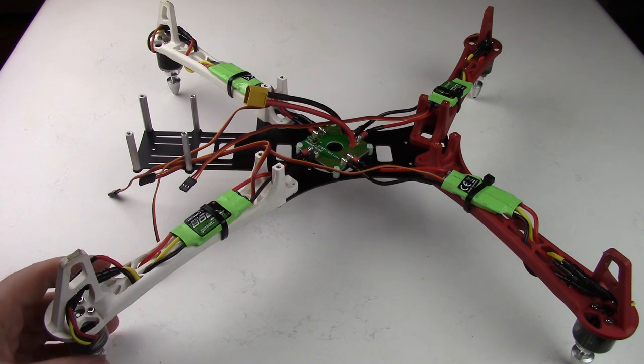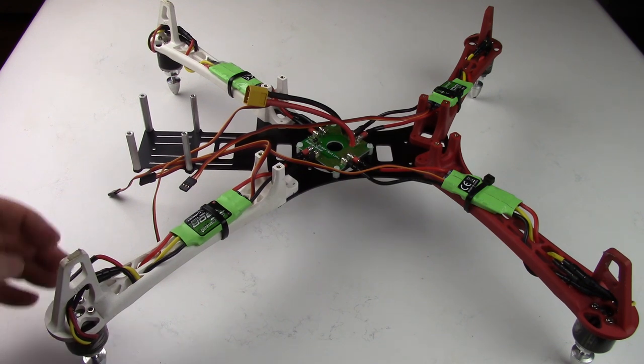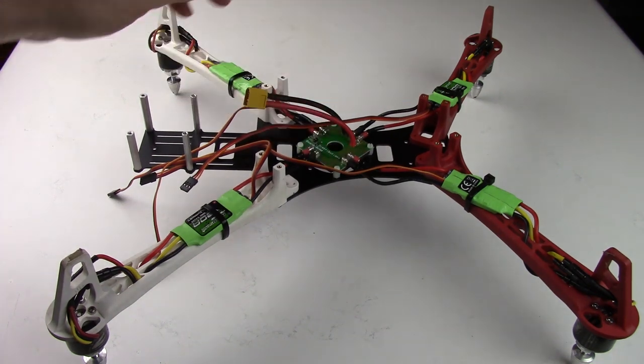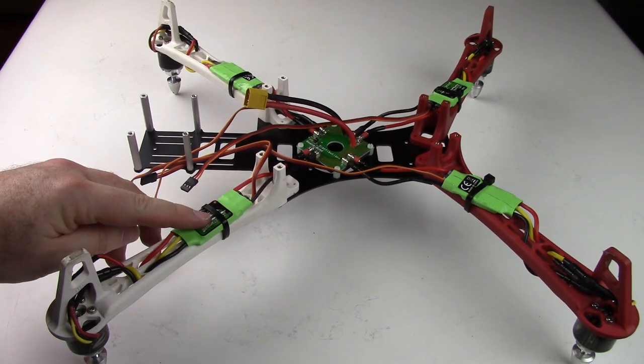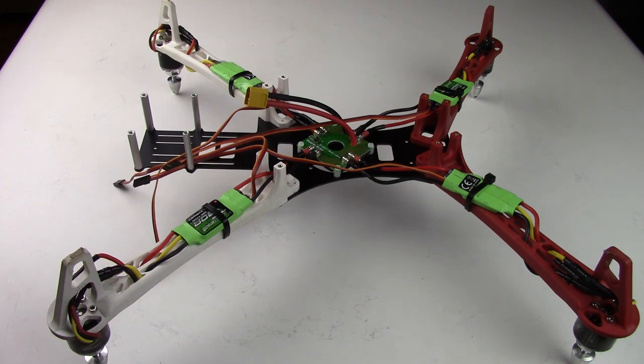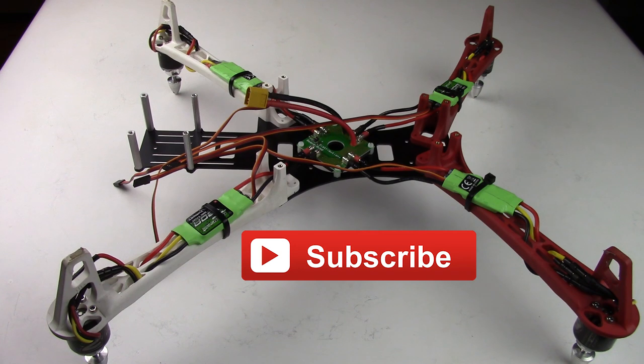So here it is, the drivetrain of the copter is all assembled. We have a main distribution power board, we have an ESC and a motor on each arm. In the next video in this series, we'll be installing the flight controller. If you like this series and my other multi-rotor videos, please like this video and subscribe to my channel. Thanks for watching.